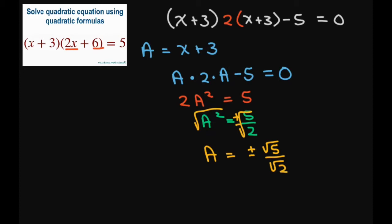When you rationalize the denominator here, this is going to give you equals plus or minus square root of 10 divided by 2.